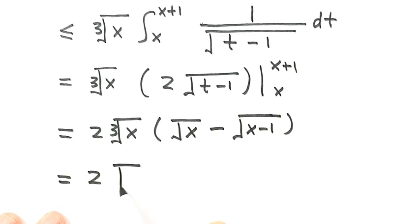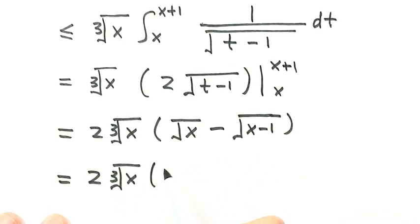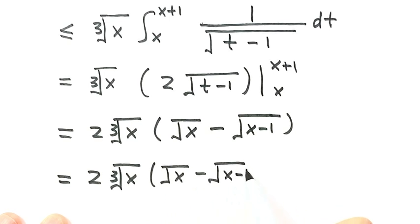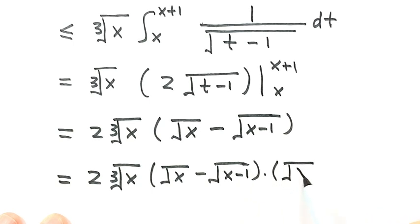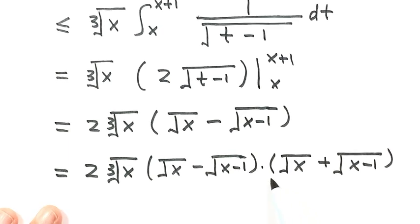Because x goes to positive infinity, we want to simplify this part. We multiply by the conjugate — that's square root of x plus 1 minus square root of x minus 1 on top, divided by the same term, square root of x plus 1 plus square root of x minus 1, on the bottom.